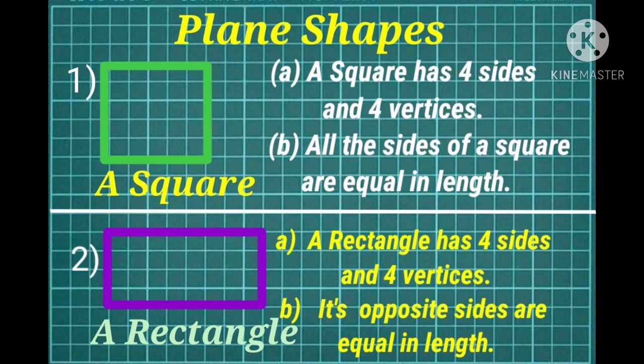Now the second one is rectangle. A rectangle has 4 sides and 4 vertices. Its opposite sides are equal in length.